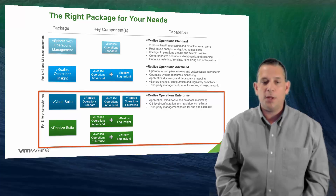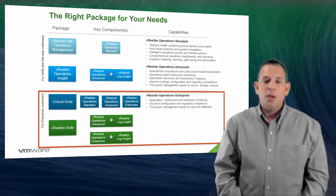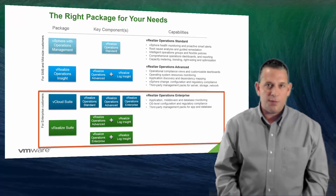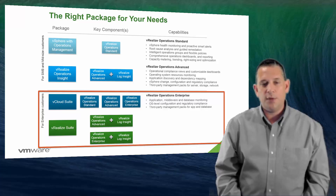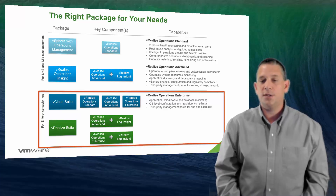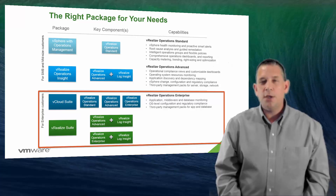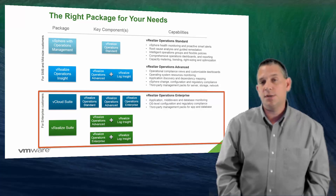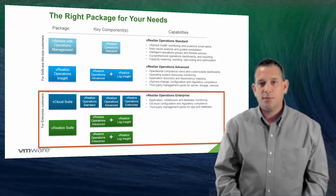The vRealize Suite can be licensed per CPU for an on-premise private cloud and virtualized environment, or per OSI for public cloud and physical hardware workloads. To sum up the differences: if the customer has only a homogeneous all-vSphere environment, talk to them about the vCloud Suite. If they have a heterogeneous or mixed environment with vSphere and Citrix, for example, and are using various cloud instances such as vCloud Air and Amazon Web Services, then you'd want to discuss the vRealize Suite. That completes the session on vRealize Operations 6 and its editions and different packaging options.